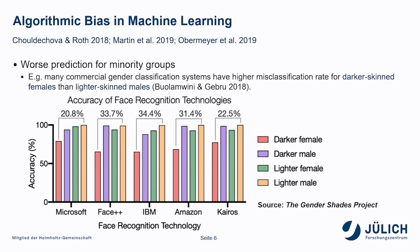However, in many machine learning applications, people have discovered prediction bias against the benefits of some minority groups, just as Sarah mentioned in her presentation. Here I give another example: a study showed that many commercial gender classification systems generated higher accuracy in lighter-skin males compared to the contrast.